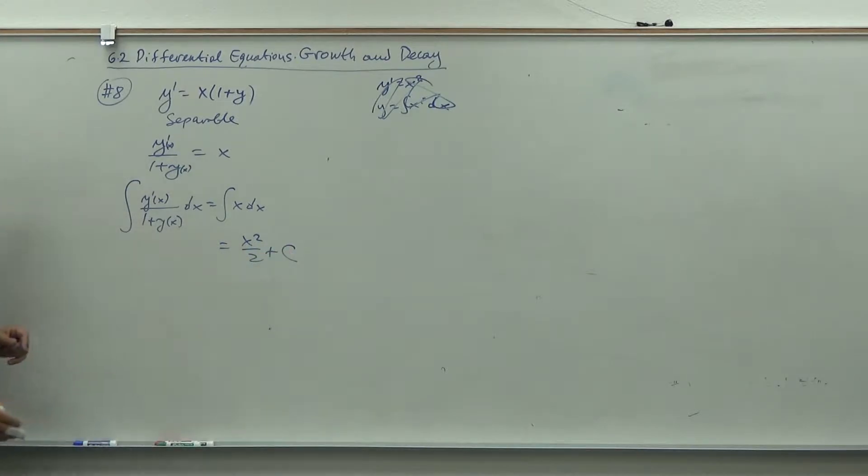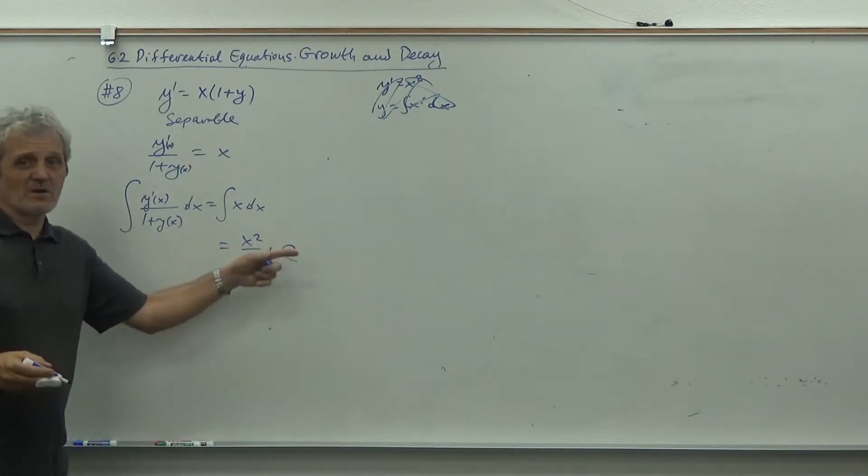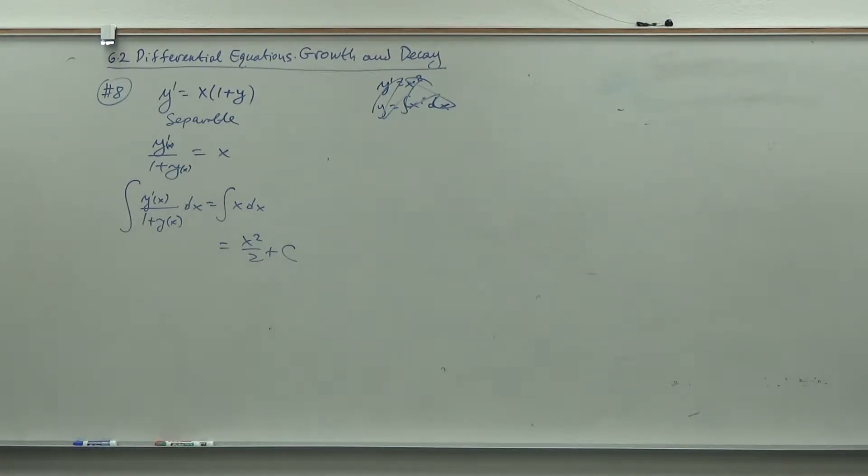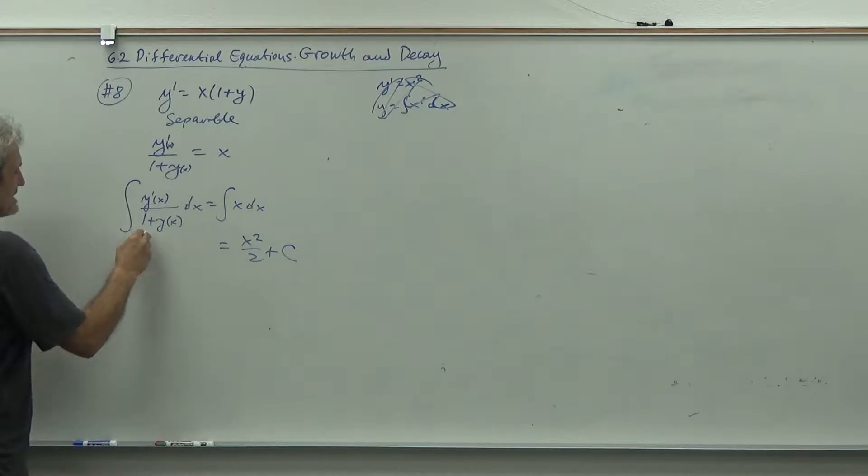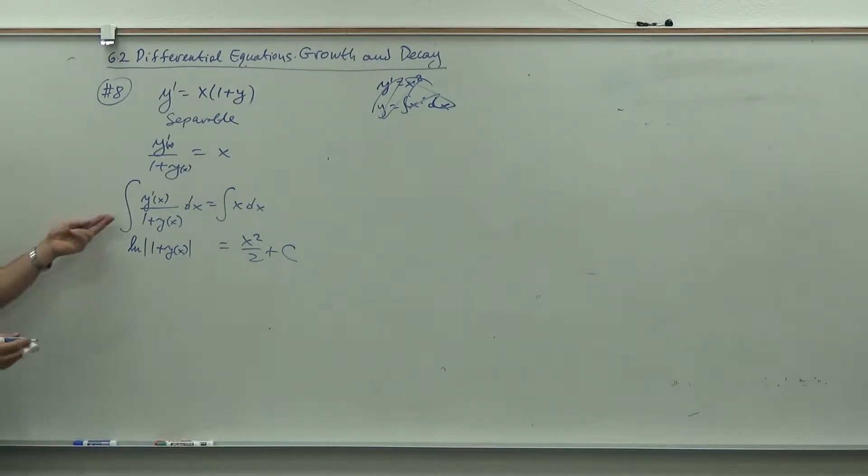So generally we can say the integral of y prime of x over one plus y of x dx is integral of x dx. Right side no problems, x squared over two plus C. On the left side I will not put plus C because those two C's could be combined. What happens with this integral? I can write it as ln of absolute value of one plus y of x. Why is that? Because I used substitution: u equals one plus y of x, then du is y prime of x dx.